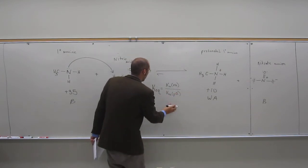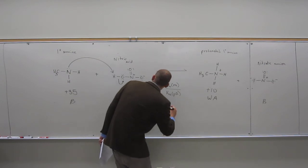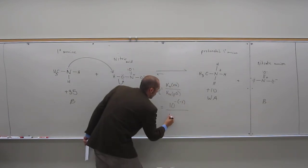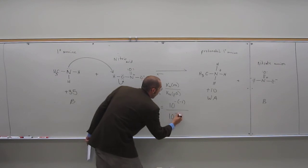So, what's the Ka of the reactant acid? Can you guess? 10 to the negative, negative 1. Over the product acid? 10 to the negative 10.